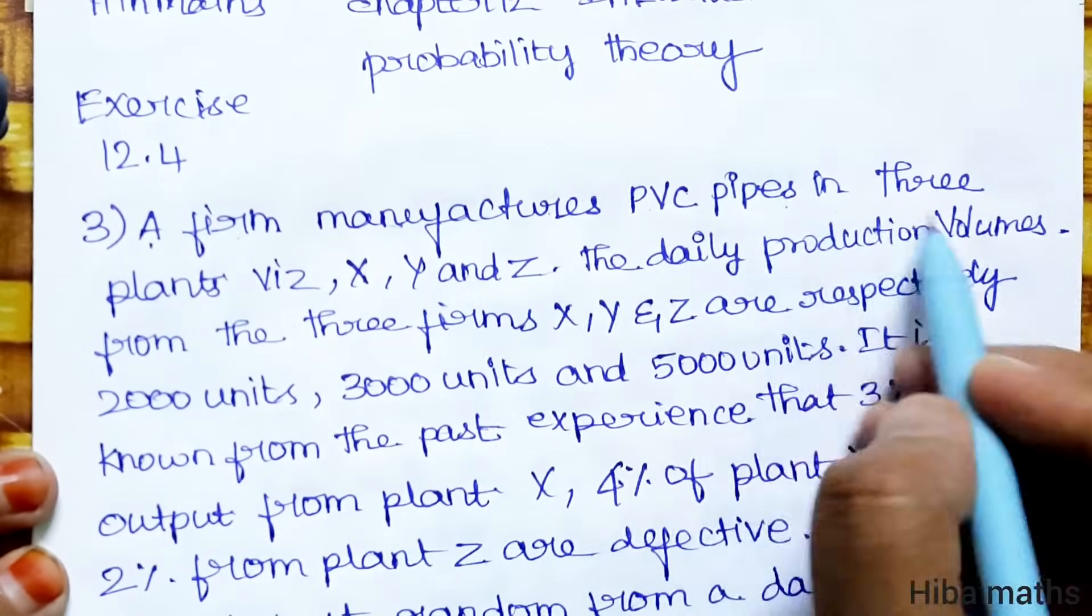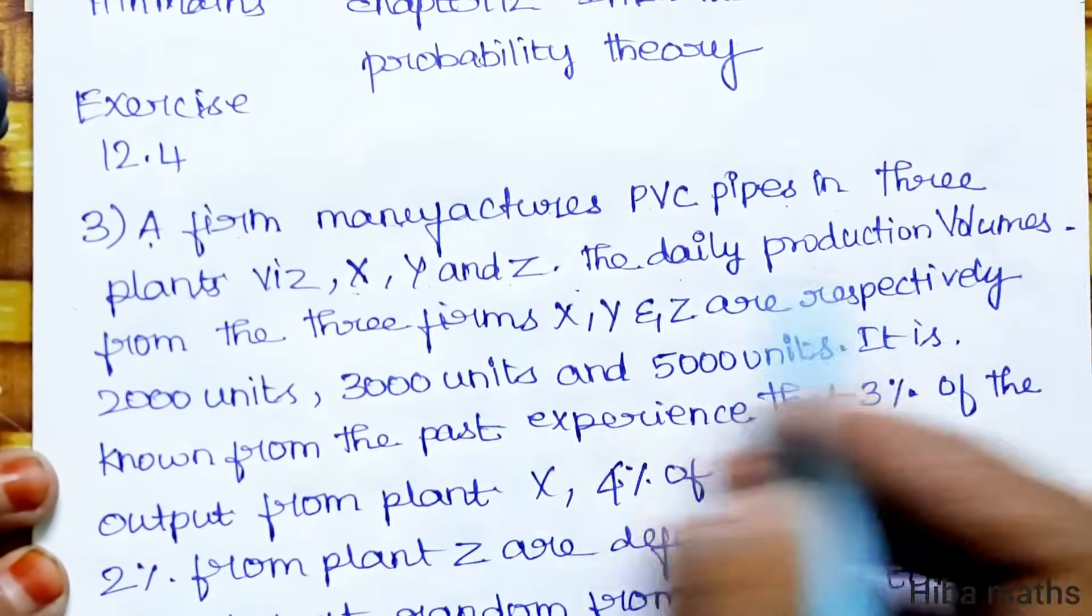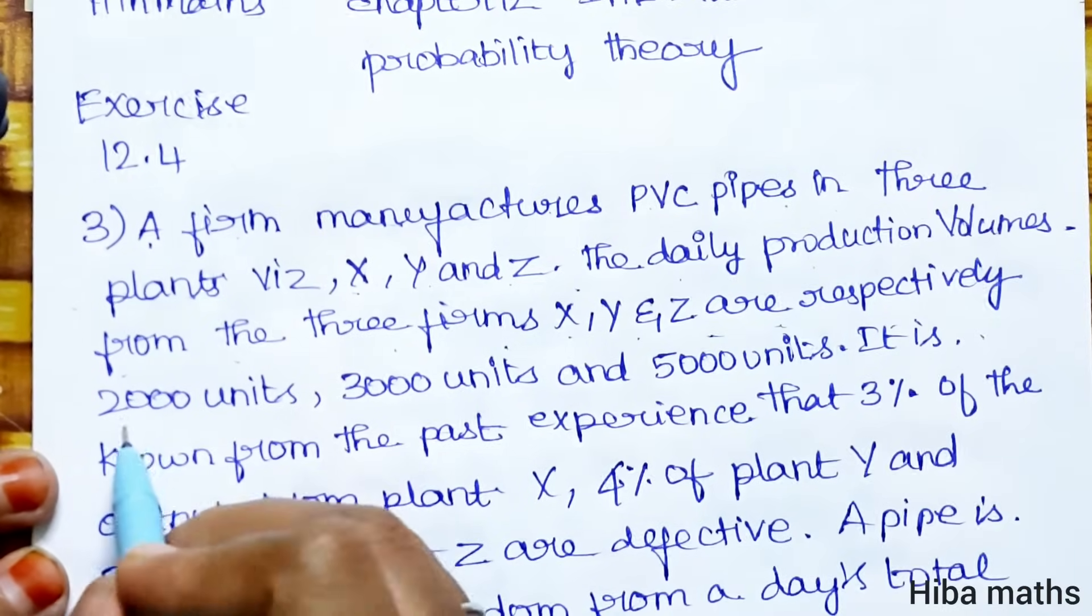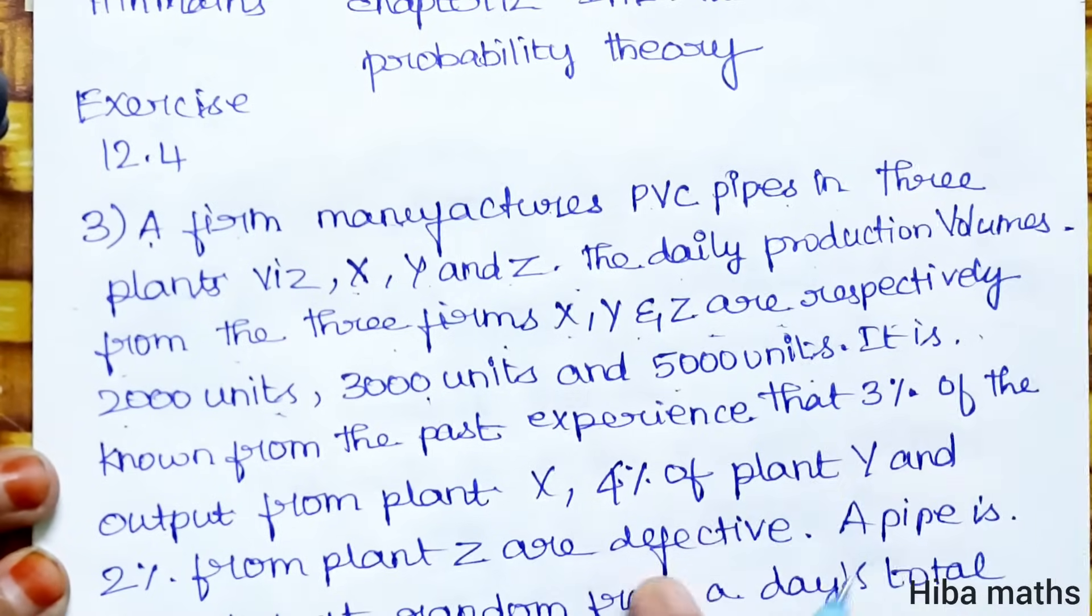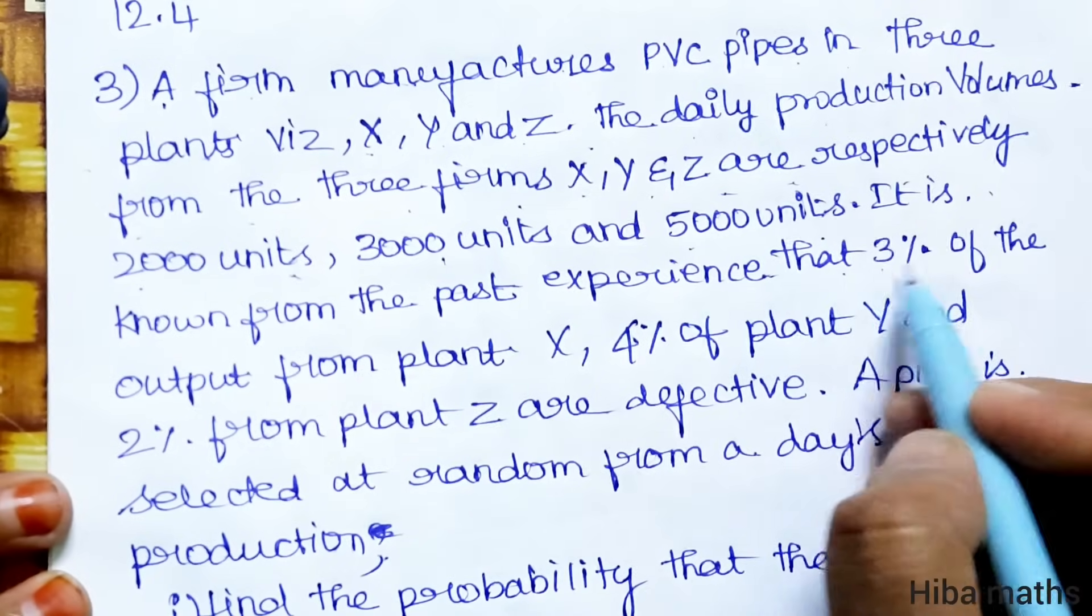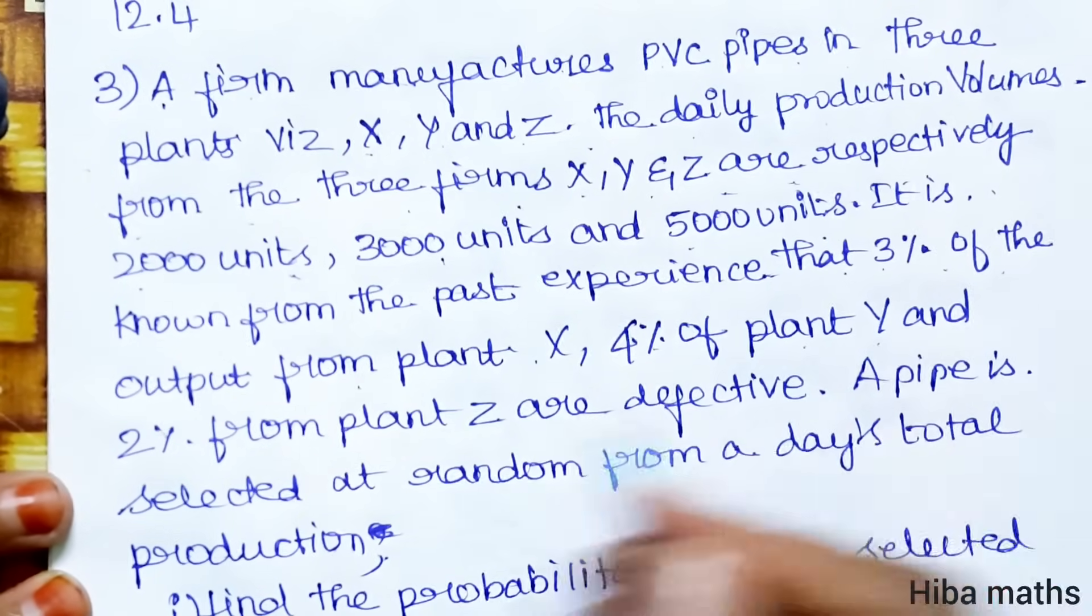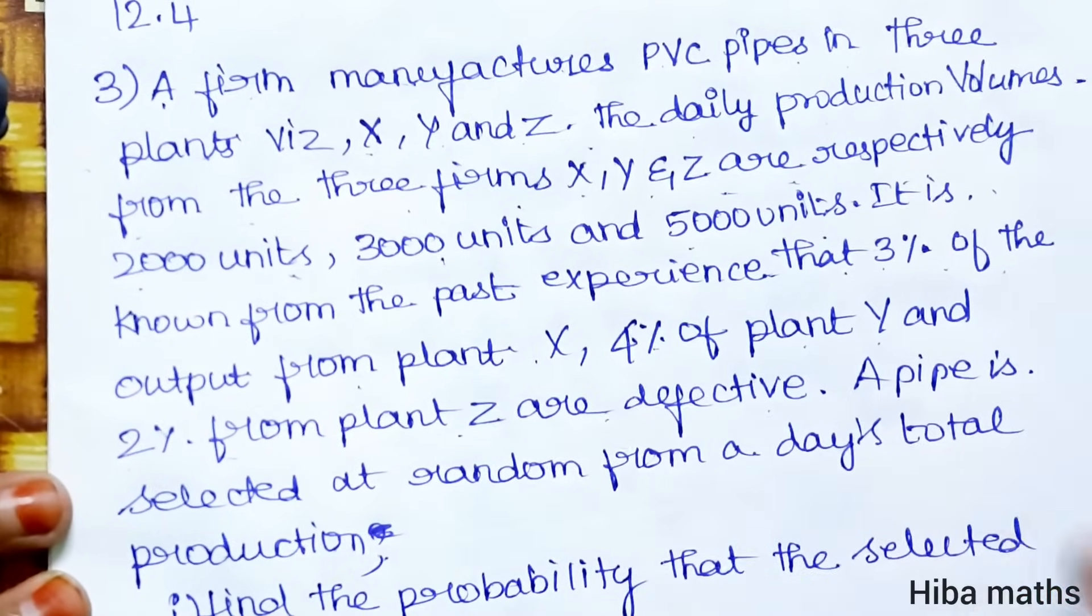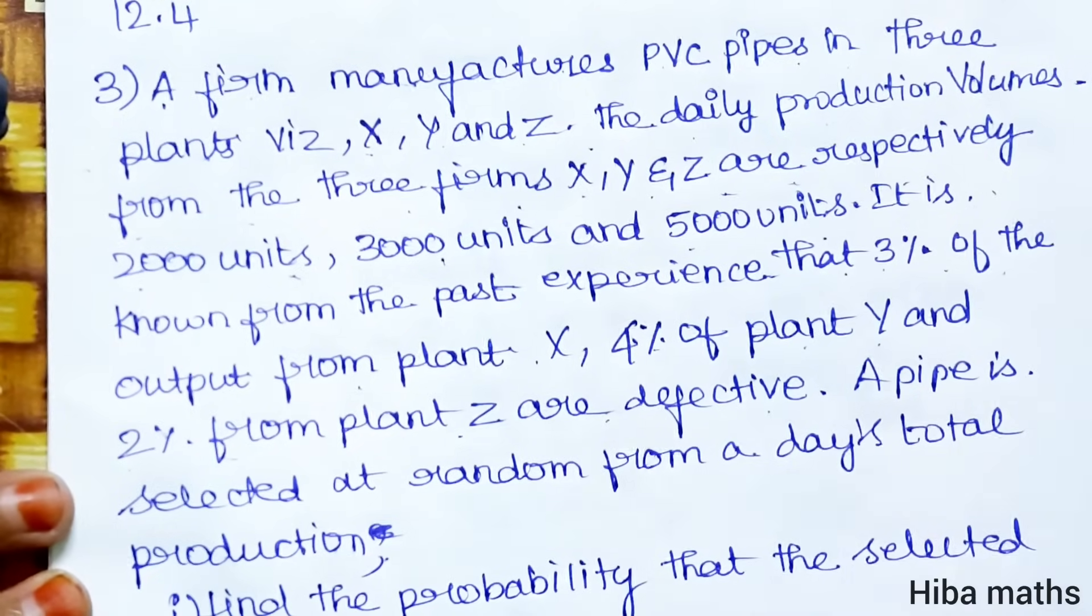PVC pipe in 3 plants X, Y and Z. The daily production volumes from the 3 firms X, Y, Z are respectively 2,000 units, 3,000 units and 5,000 units. It is known from the past experience that 3% of the output from X, 4% of plant Y and 2% of plant Z are defective.